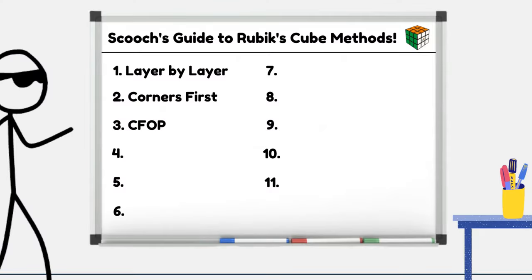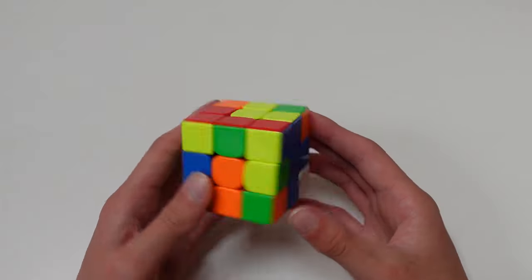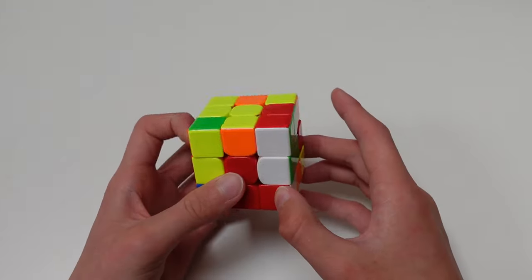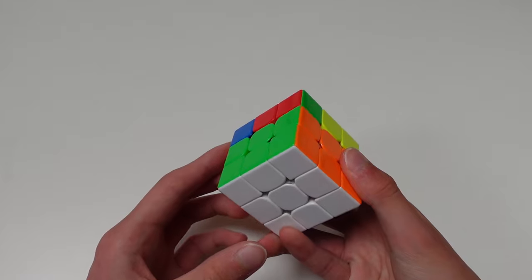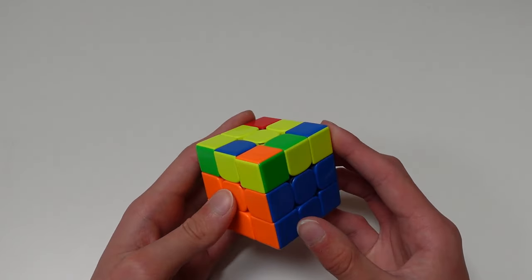Number 3, CFOP method. In CFOP, you make a cross just like layer by layer, but instead of doing the corners and then solving the edges in the middle layer, you do them at the same time by pairing up a matching corner and edge and inserting. This is called F2L, which stands for first two layers. From here, you orient the last layer, meaning you have just one colour on the top.